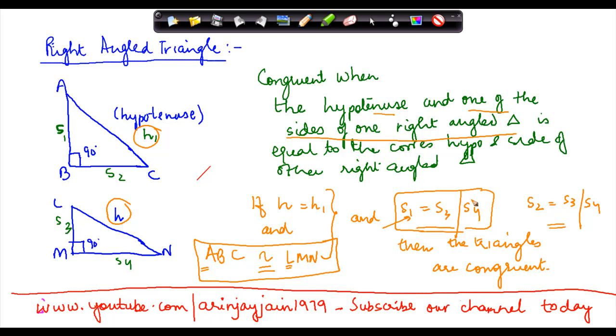So the idea is that if the hypotenuses are equal and one of the sides are respectively equal to the sides of the other one. So if you are looking for S1, then it has to be S3. If you are looking for S2, then S4.